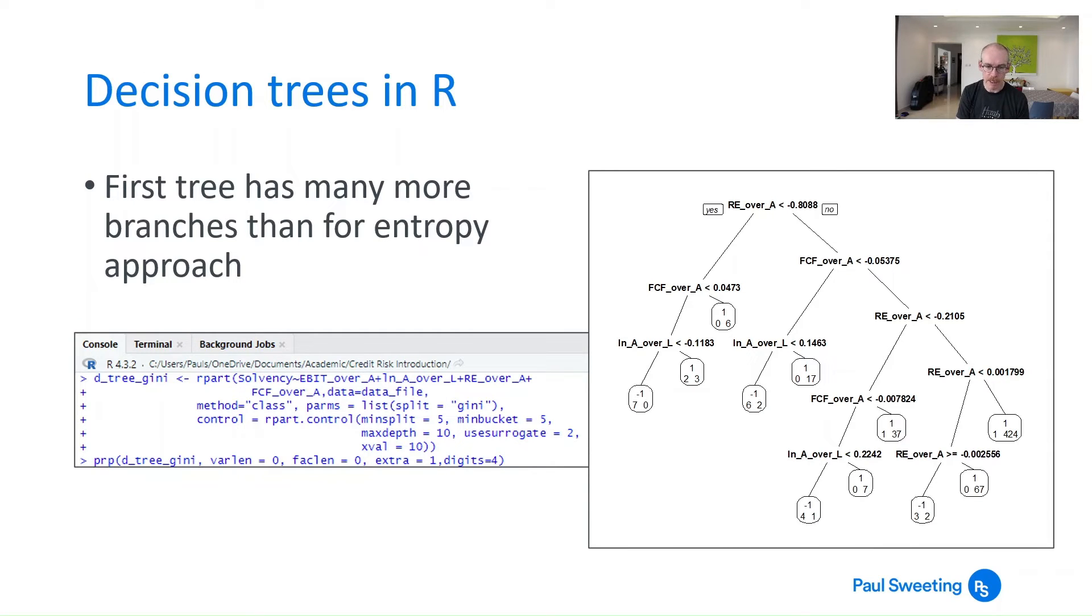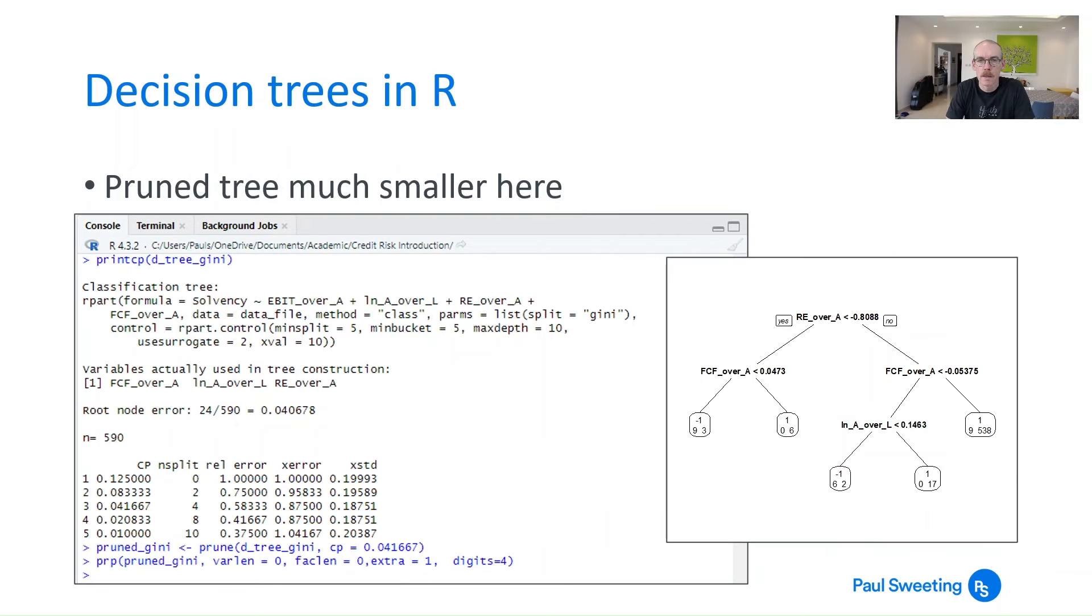So using this calculation initially you find you've got a much much bigger tree. And also you're not starting with log of assets over liabilities. You're starting with retained assets over earnings. So you do get different numbers as well as one which has got many many more branches. You've got one which is actually in a different order.